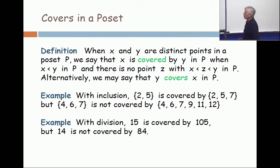So, the notion of a cover. Let's take the third example with division. 15 is less than 105 because the quotient is 7, remainder 0. But it's covered by it. There's no way to have a multiple of 15 which divides 105 evenly other than to go all the way to 105.